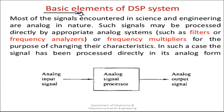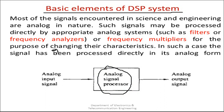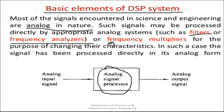This is an important part as far as the syllabus is considered. To understand the basic elements of DSP, first let's analyze what analog signal processing means. Most of the signals encountered in science and engineering are analog in nature. These signals may be processed directly by appropriate analog systems such as analog filters, frequency analyzers, or frequency multipliers for the purpose of changing their characteristics. In such a case, the signal is processed directly in its analog form.